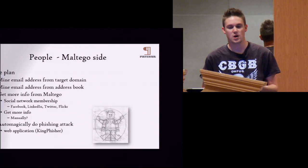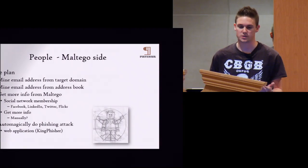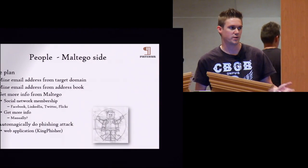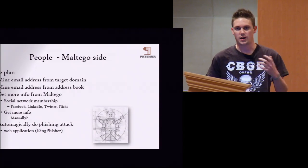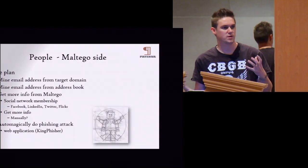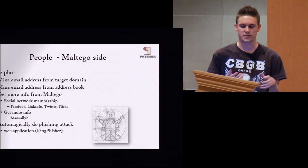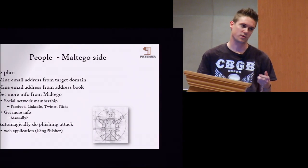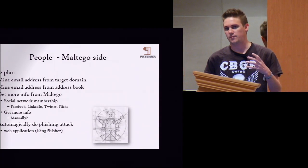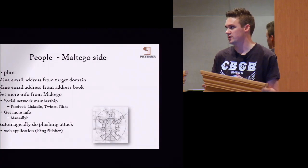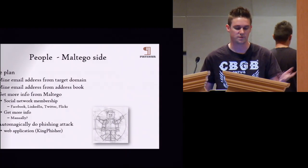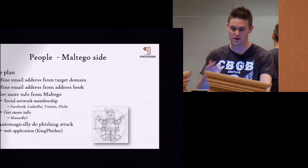The plan is: mine for email addresses from a target domain, or get them from an address book if you've compromised a machine or have OWA access. Pull their address book into your graph. Now your graph has a bunch of email addresses. You can map these to social networks — look them up on Facebook, Twitter, LinkedIn. You can also add information manually — I can say 'I know this person is on some sort of VKontakte' and throw that information in.